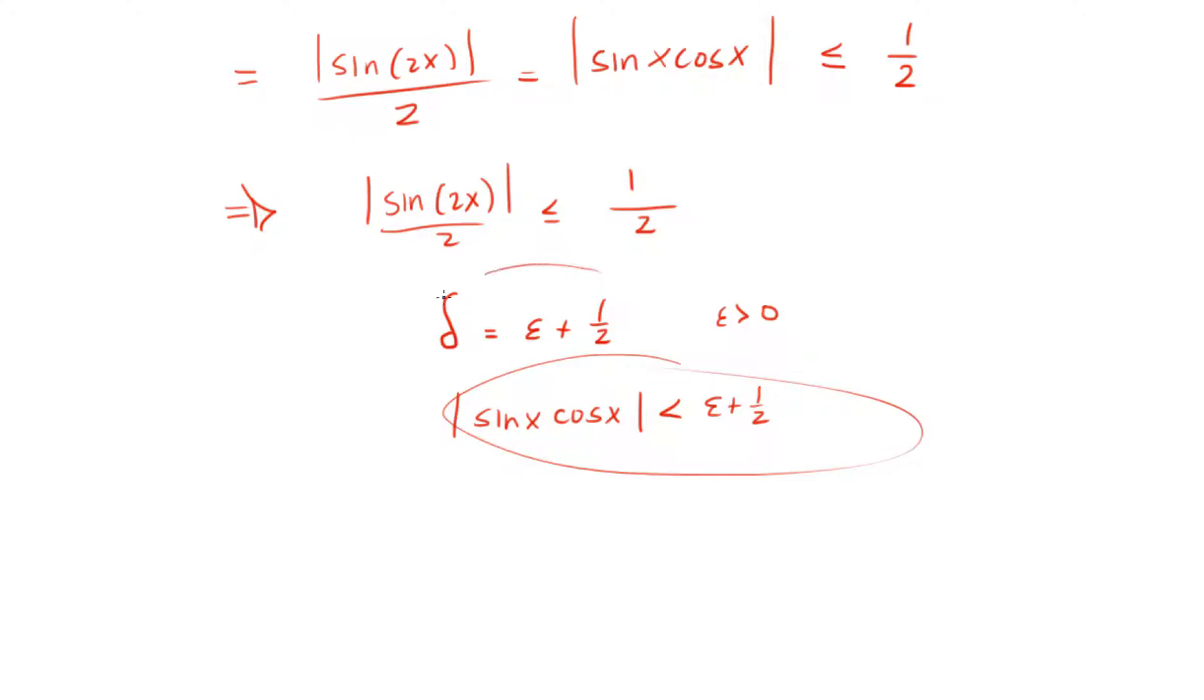Therefore, using this delta, it will always be satisfied that this inequality stays less than epsilon, and that will finish the proof.